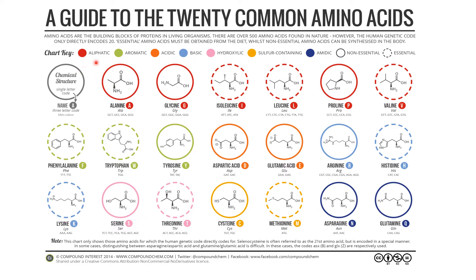This chart shows which amino acids are aliphatic, which are aromatic, which are acidic or which are basic. This is an important guide to identify and classify the different types of amino acids.